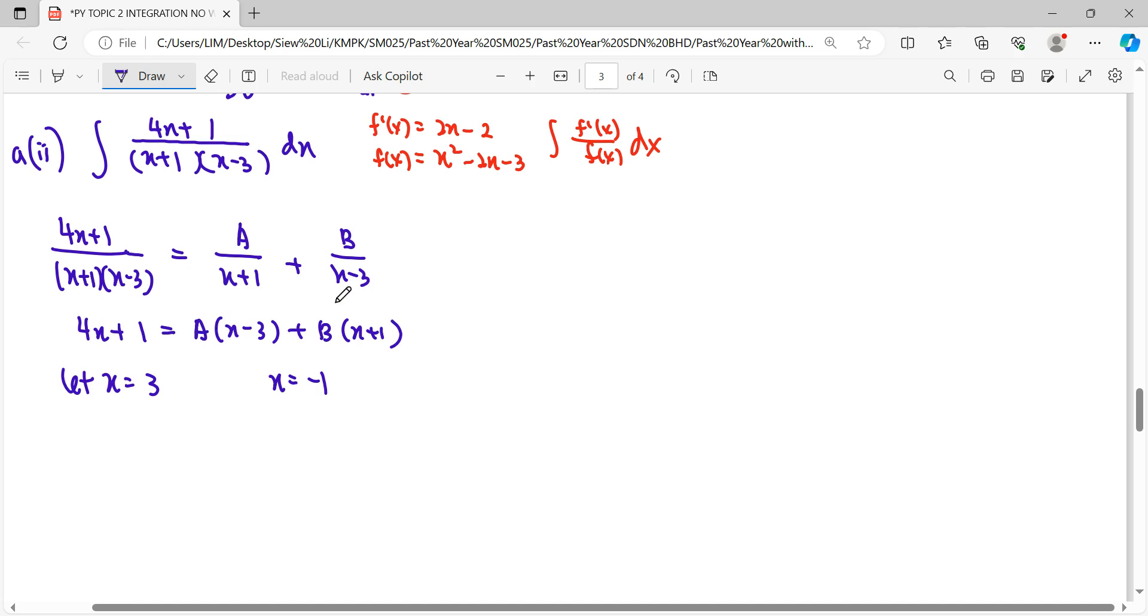So substitute x=3, it gives you 13. When we substitute here, 0 for B, so B is 13 over 4. Then we substitute negative 1. Negative 3, so when we substitute here, negative 4A, and substitute negative 1 so it becomes 0. A will be 3 over 4.